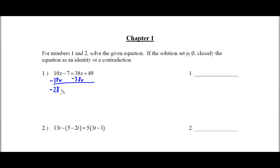This gives me negative 28x minus 7 equals 49. I'm going to add 7 to both sides. So negative 28x is equal to 56. Divide both sides by negative 28. x is equal to negative 2. And there's your answer for problem number 1.